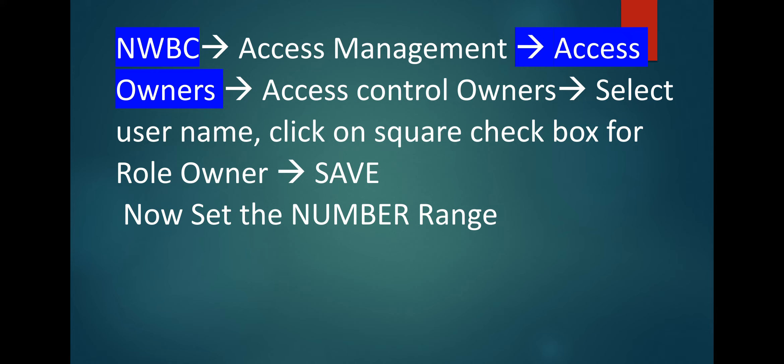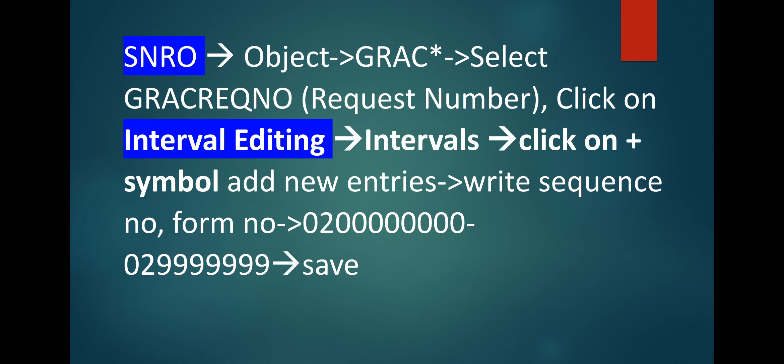If the user is created, we are going to maintain that user in access owners. Go to NWBC > Access Management > Access Owners. This is the path — then access control owner, select username, click on the checkbox for role owner and save. Now set the number range — number range can be set by SNRO. In SNRO, object GRC*, select GRC request number, click on interval editing, then intervals, click on plus symbol and add new entries.